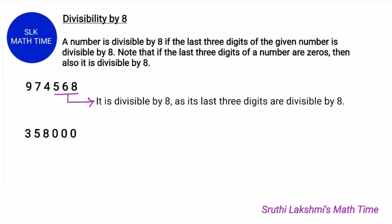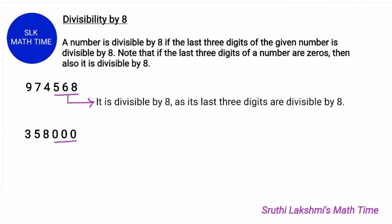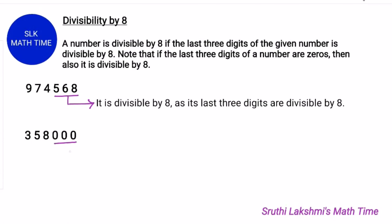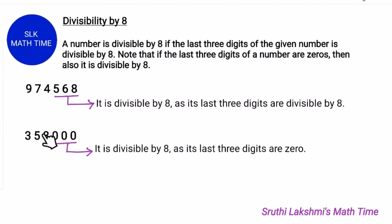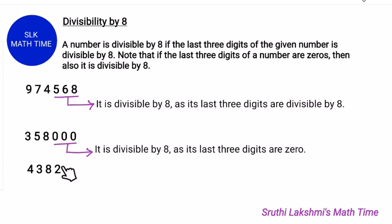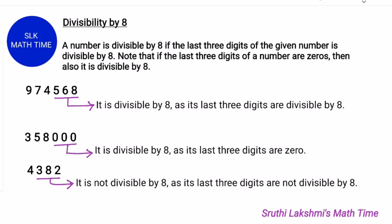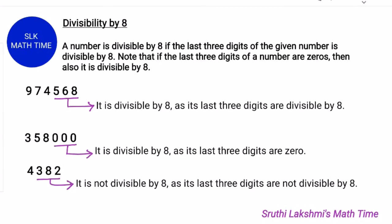Consider the number 358000. Here the last three digits are 000. When the last three digits are all 0s, the number is also divisible by 8. So 358000 is divisible by 8. Next, consider 4382. The last three digits are 382, and 382 is not divisible by 8. So 4382 is also not divisible by 8.